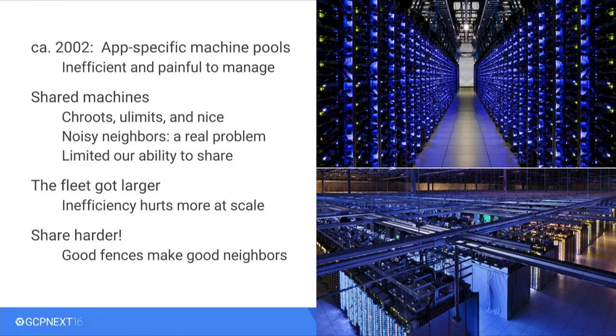Every single app had its own machine. You would use ticketing and things like that to find machines. It was hard to manage, hard to scale, painful for people to operate. So we started to figure out what we needed to do to move away from the one-app-per-machine model. The very beginnings of that were things like chroots, using nice, using some of the traditional things that allow you to multi-tenant.